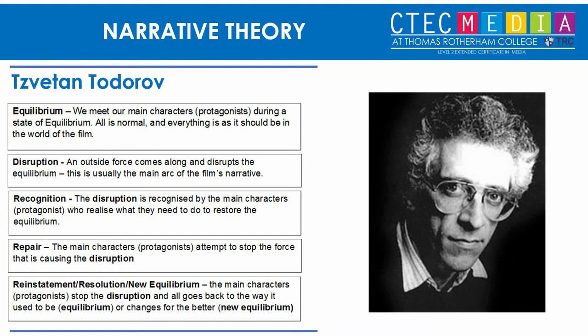It doesn't necessarily need to be action films — you can apply Todorov to any genre. For example, with a romance film: the equilibrium could be a guy who wants to be alone, the disruption could be he meets someone he falls in love with and it changes his whole life outlook, and the recognition and repair could be him and the girl trying to get together. It could be any particular film genre, really, even though the language used does suggest an action feel.